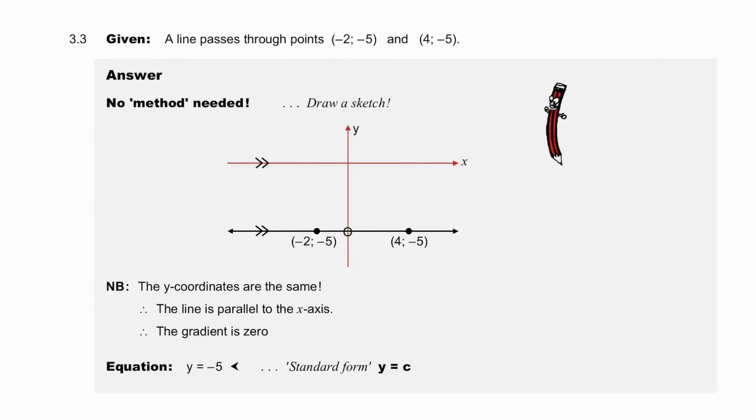Pause to absorb. Again, did you notice this time that the y coordinates were the same? And what does that mean? The y coordinates being the same means that the line that we are looking at, the horizontal line, is the line y equals minus 5, with standard form y equals c. No method was needed. We simply needed to draw a sketch.